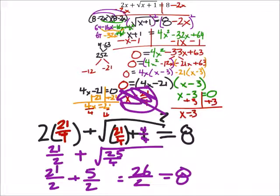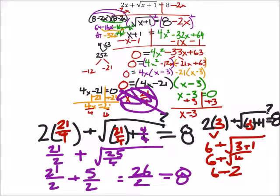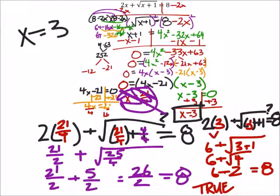All right, let's try it with x is 3 then. So, I've got 2 times x plus the square root of x plus 1. Does this equal 8? And we'll replace the x with 3. 2 times 3 is 6. Then we've got plus the square root of 3 plus 1, which is 4. So, 6 plus the square root of 4 would be 6 plus 2, which does equal 8. That's true. So, right there we know that x is 3 is correct. And that's our answer.